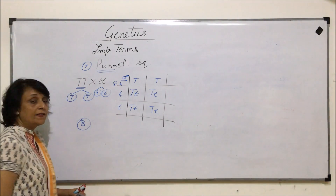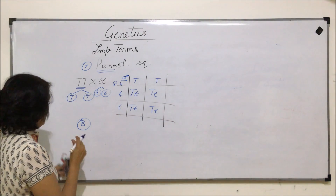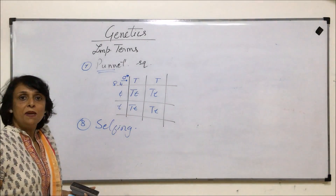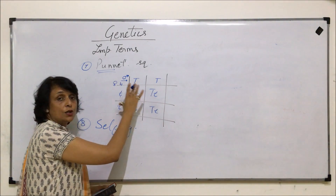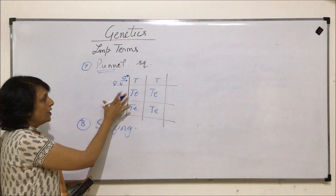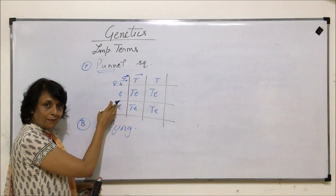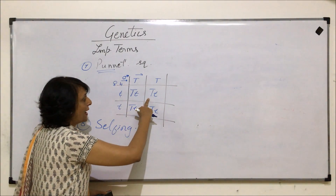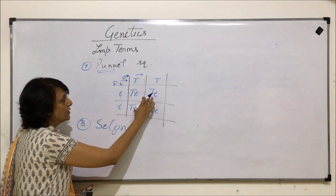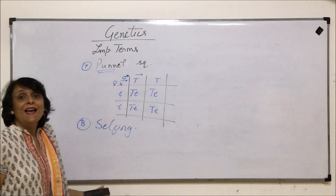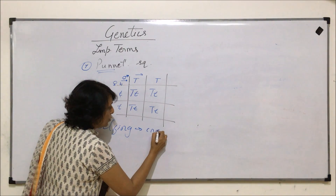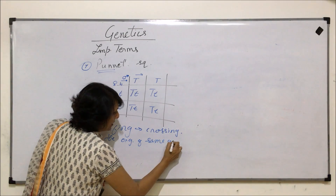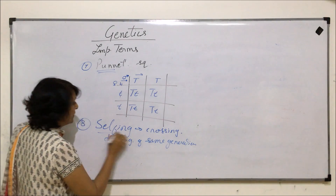The eighth term is selfing. Selfing means crossing the members of the same generation. The parent generation produced gametes, and these four offspring are from the first generation or F1. When two plants of F1 are selfed, that means we have taken two plants of the same generation and crossed them. So selfing is crossing organisms of the same generation.